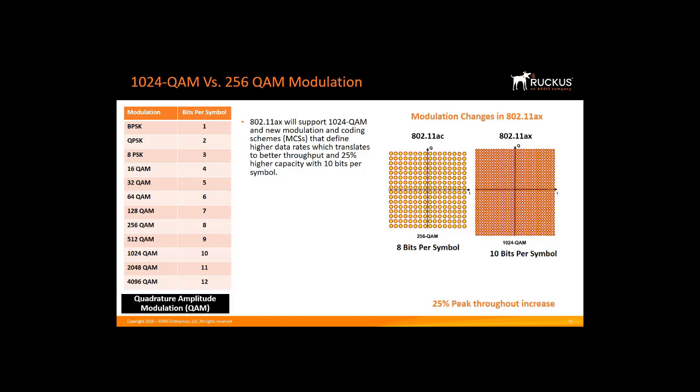1024 QAM provides 25% higher capacity with 10 bits per symbol versus 8 bits in 256 QAM. More bits equals more data, and payload delivery is more efficient — like having a bigger truck. With over 30 billion connected things expected, higher wireless throughput facilitated by 1024 QAM is crucial to ensuring quality of service, or QoS, in high-density locations such as stadiums, convention centers, transportation hubs, and auditoriums.